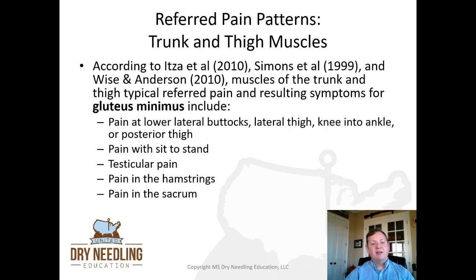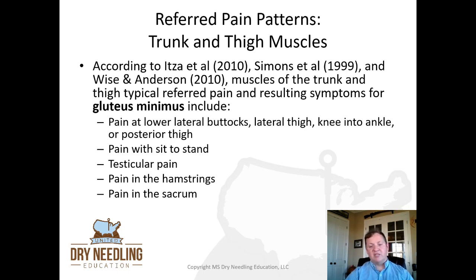Gluteus minimus: pain at the lower lateral buttocks, the lateral thigh, knee into the ankle, and the posterior thigh. Pain with sit-to-stand, testicular pain — all the gluteals are implicated with testicular pain — pain in the hamstrings and pain in the sacrum. The traditional Travell and Simons pain referral pattern for gluteus minimus looks just like sciatica, and oftentimes is misdiagnosed as sciatica, when it's really just a weak glute min causing a pain referral pattern down the posterior thigh.